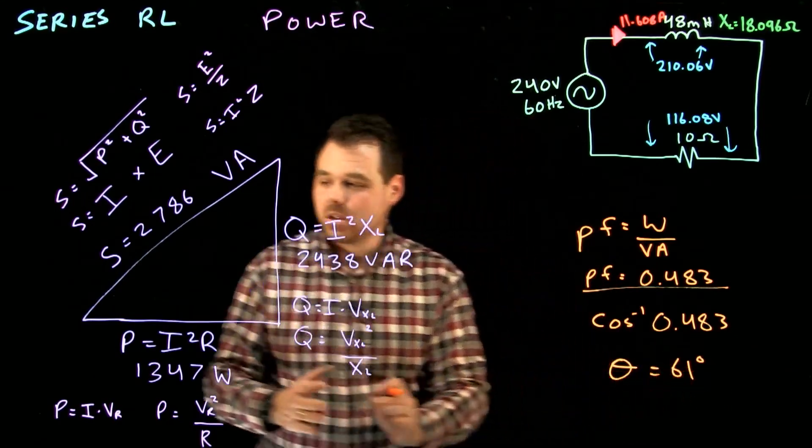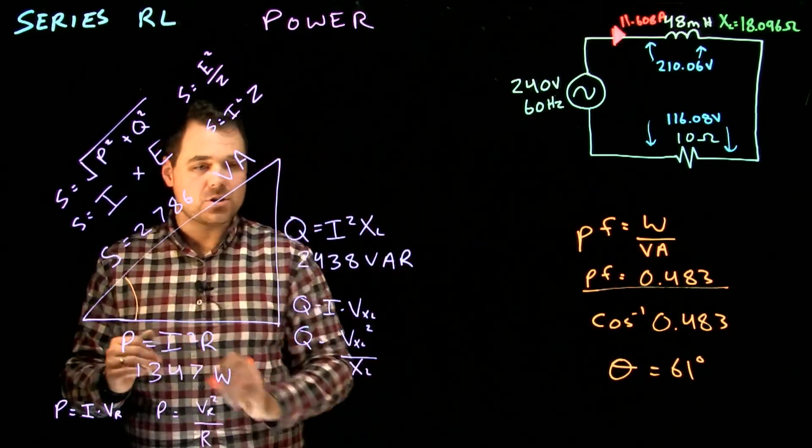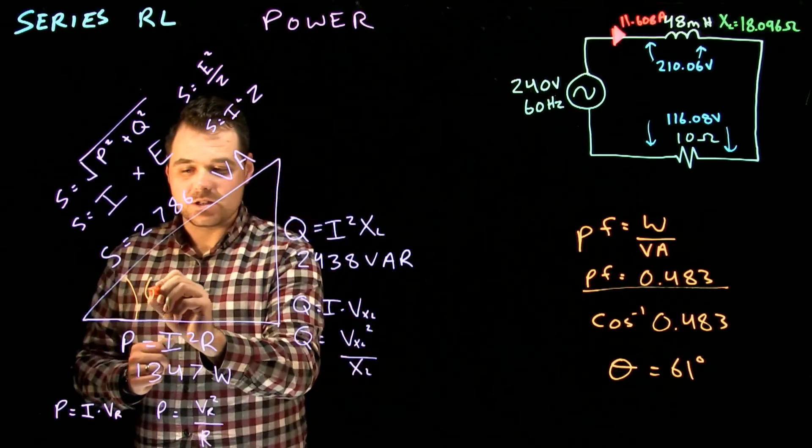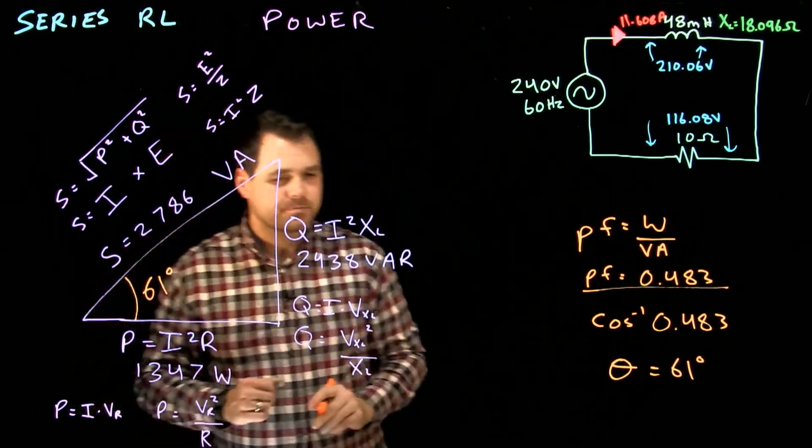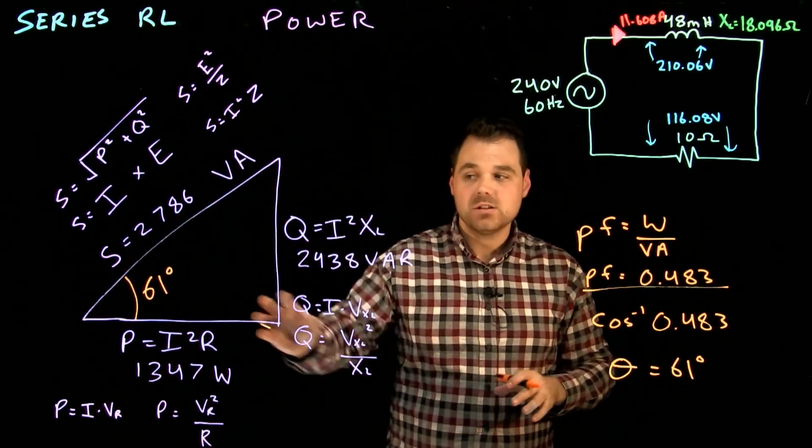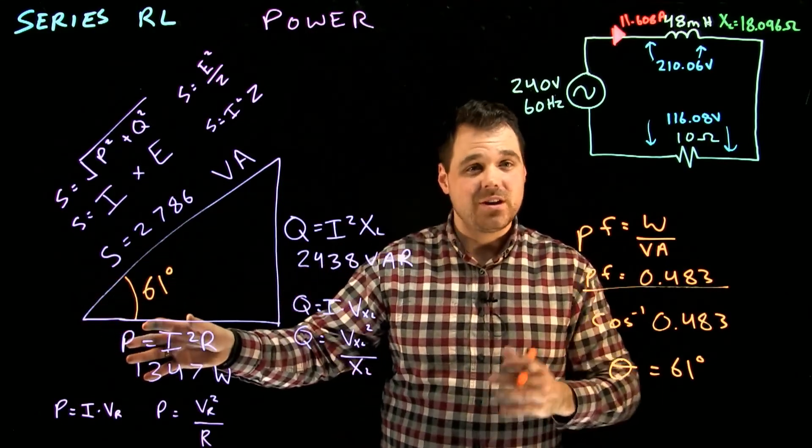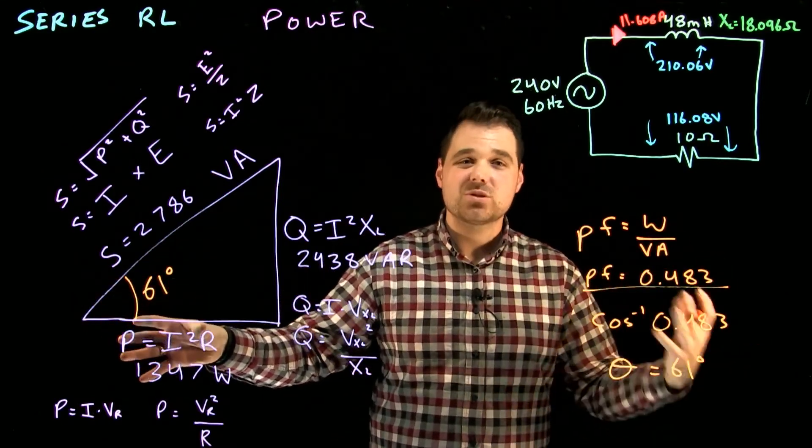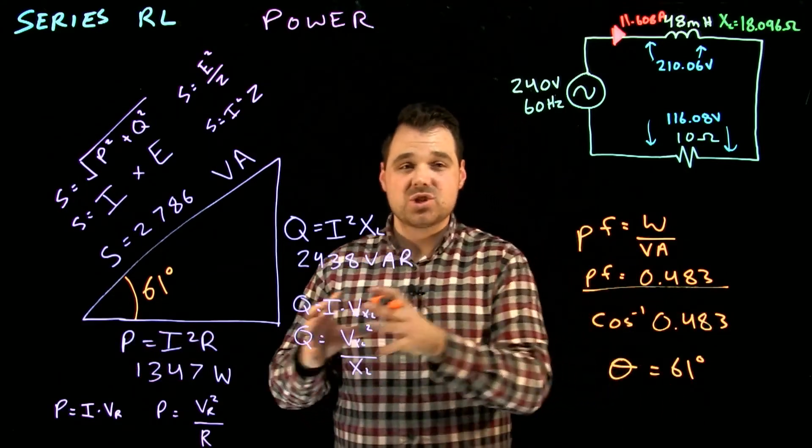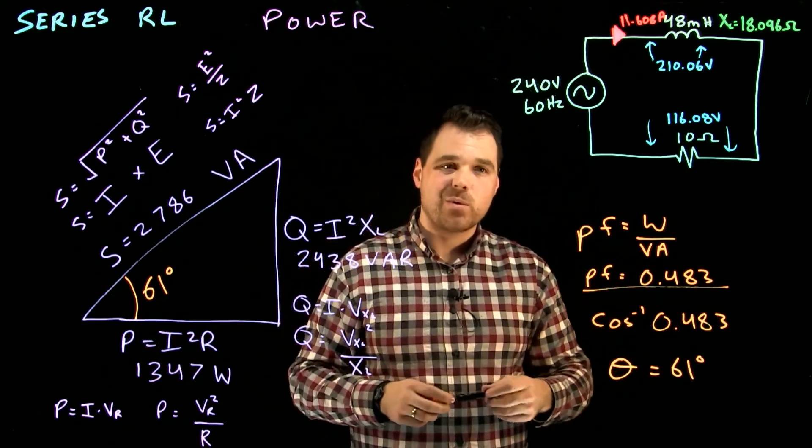Which is perfect. Because if we were to do the trigonometric functions over here we get 61 degrees. Now this angle if you remember back would match the angle in our voltage. And if you went back to our impedance triangle would also match that angle. So those relation steps stick the entire way through.